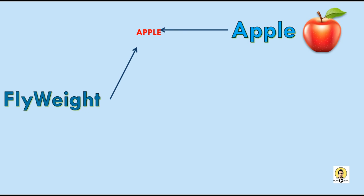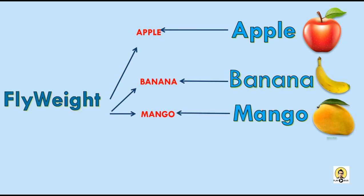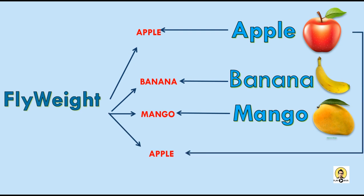We are going to see the Flyweight design pattern. In the Flyweight design pattern, the number of objects created are generally lesser than the actual number of objects which are returned. For example, in a fruit shop you ask for an apple, an apple object is created and returned to you. Then you ask for a banana, the same happens — an object is created and returned. But if an object is already there, like an apple, and you again ask for it, the same object is returned to you.